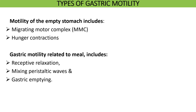Now that you know the mechanism of generation of basal electrical rhythm, let us see the various types of movements that occur in the stomach both when it is filled with a meal and when it is empty. Movements present in the stomach when it is empty are migrating motor complex and hunger contractions. Movements seen in the stomach when it is full are receptive relaxation, mixing peristaltic waves and gastric emptying.